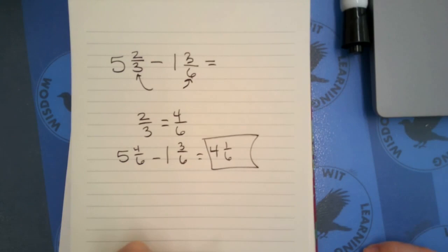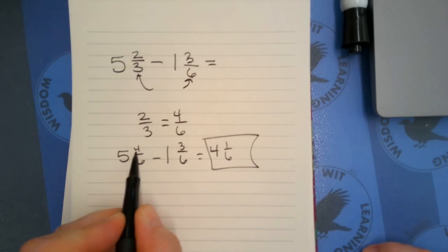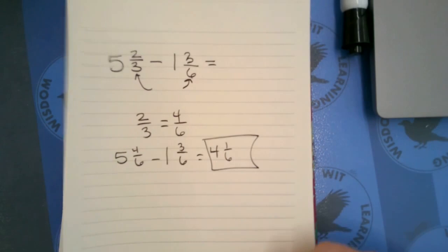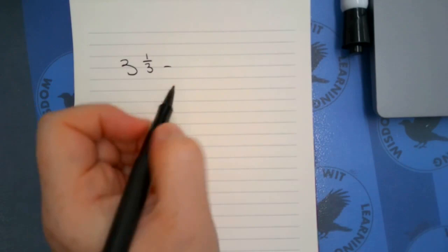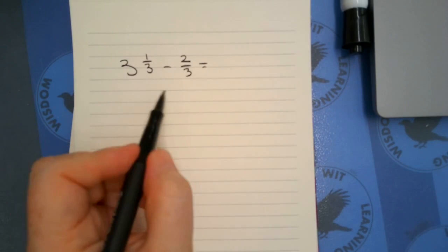Now this problem was kind of nice because I had enough sixths that I could just subtract. What happens if you have a fraction you're subtracting and you don't have enough? Just like when we're subtracting whole numbers, sometimes we need to borrow. So let's say that we had three and one third minus two thirds.